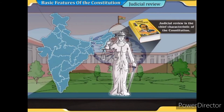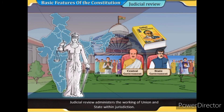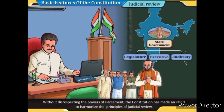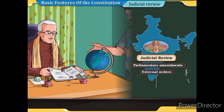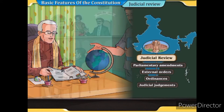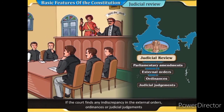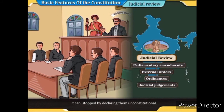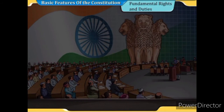Judicial review is the chief characteristic of the Constitution. It administers the working of the union and state within jurisdiction without disrespecting the powers of parliament. The Constitution has made an effort to harmonize the principles of judicial review. Parliamentary amendments, external orders, ordinances, and judicial judgments are subject to judicial review; they can be stopped by declaring them unconstitutional.